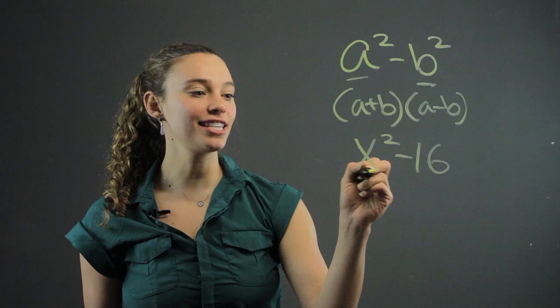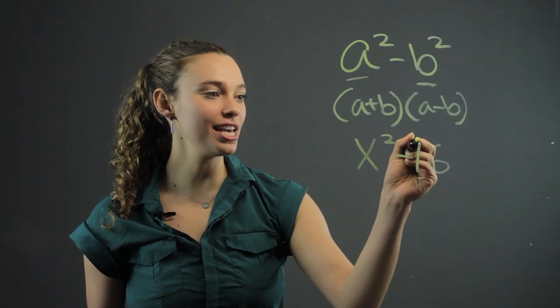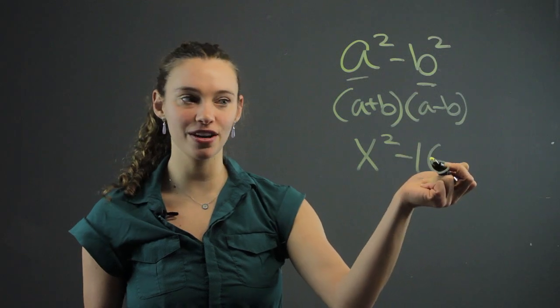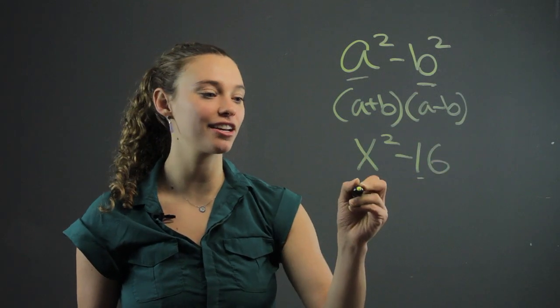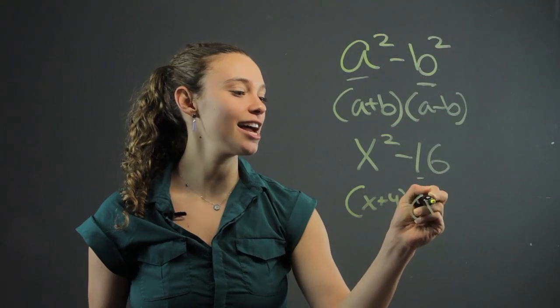We see that's a squared and that's b squared. So a in this case is x, and b in this case is 4, the square root of 16 and the square root of x squared. That's going to look like x plus 4 times x minus 4.